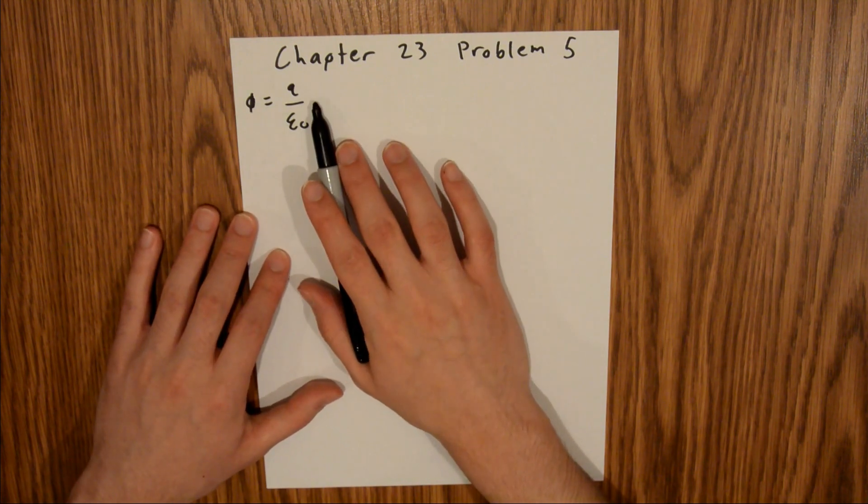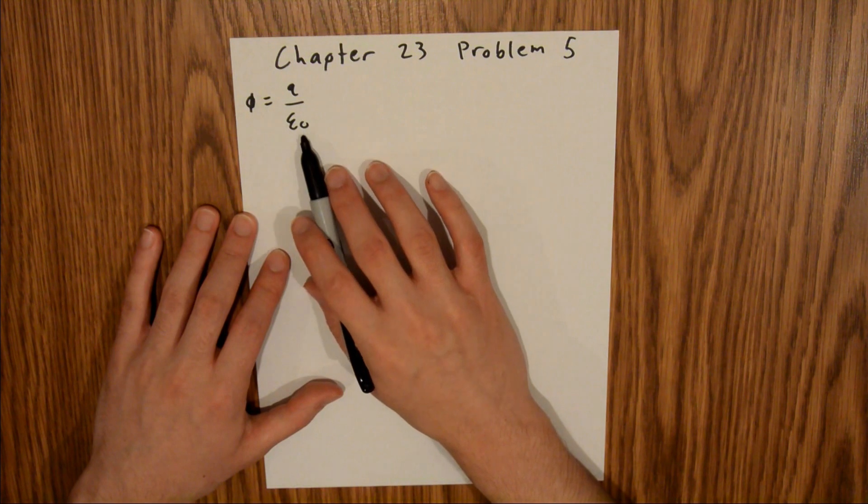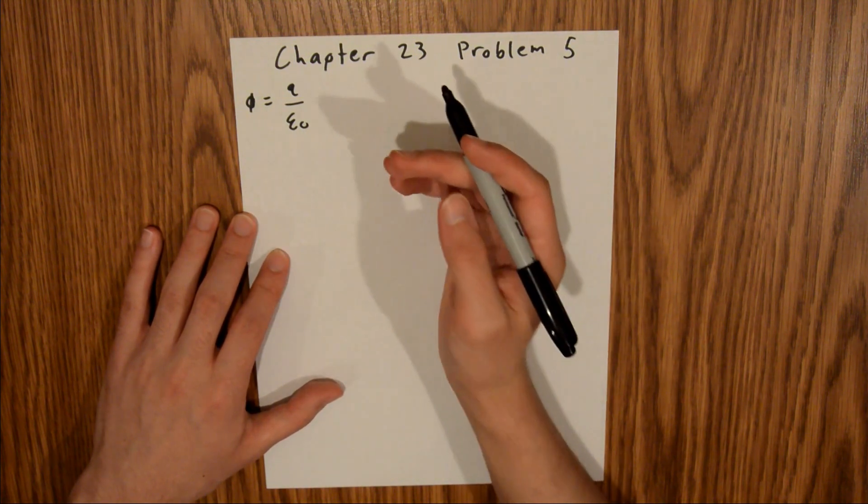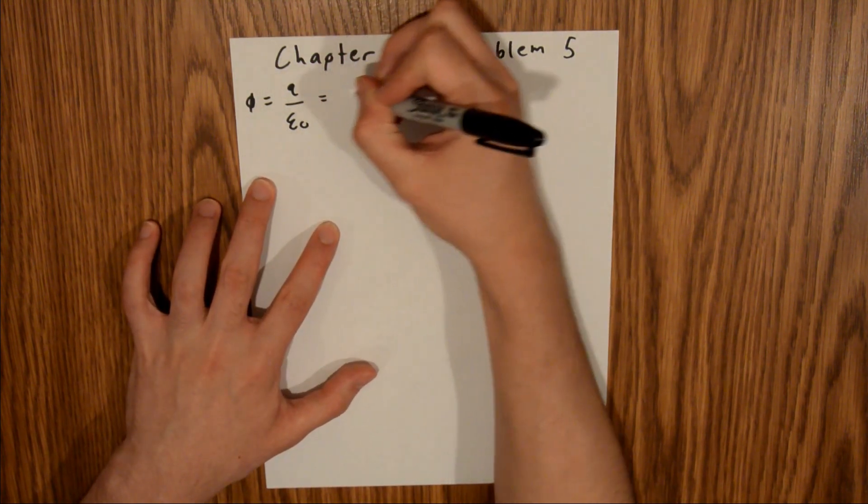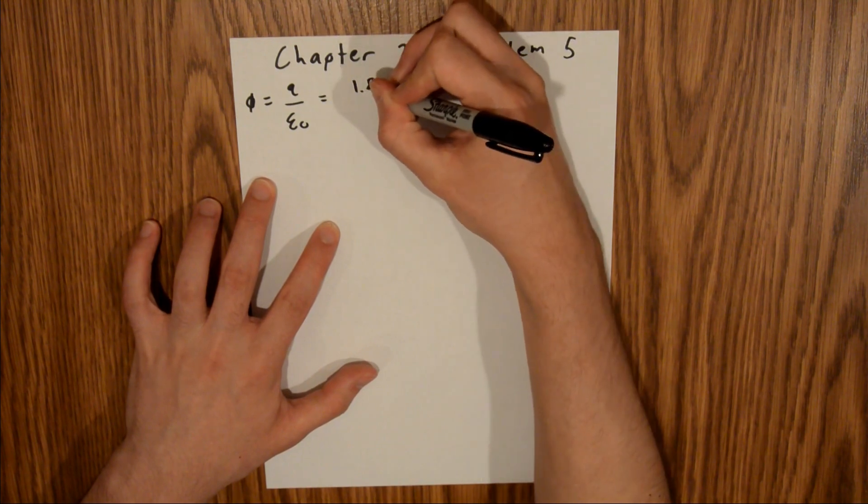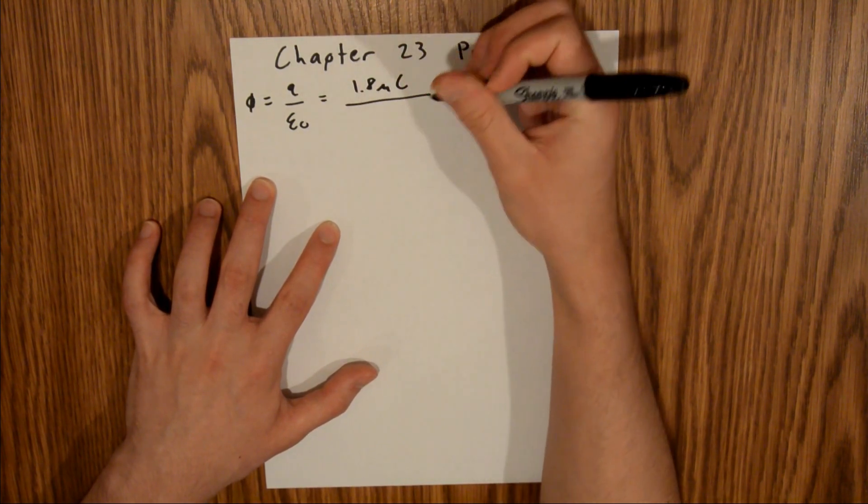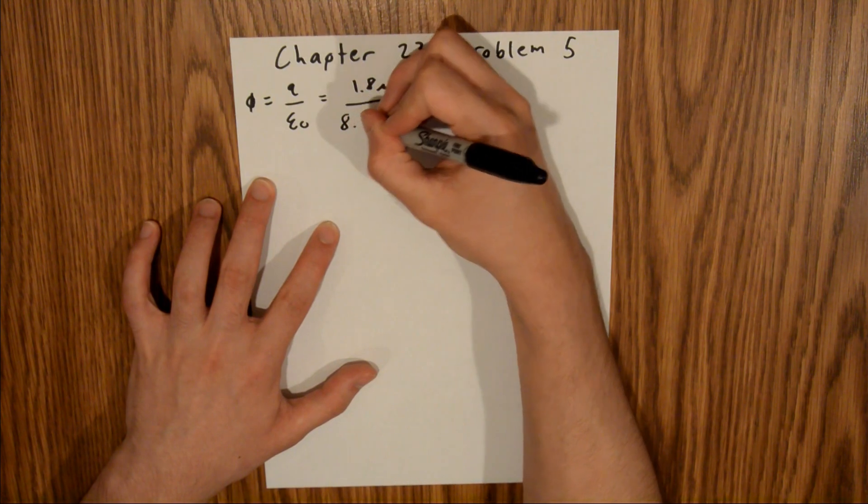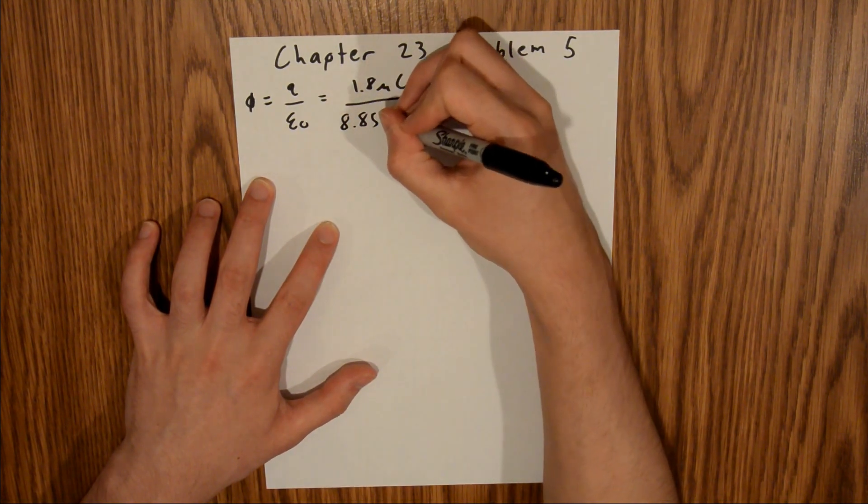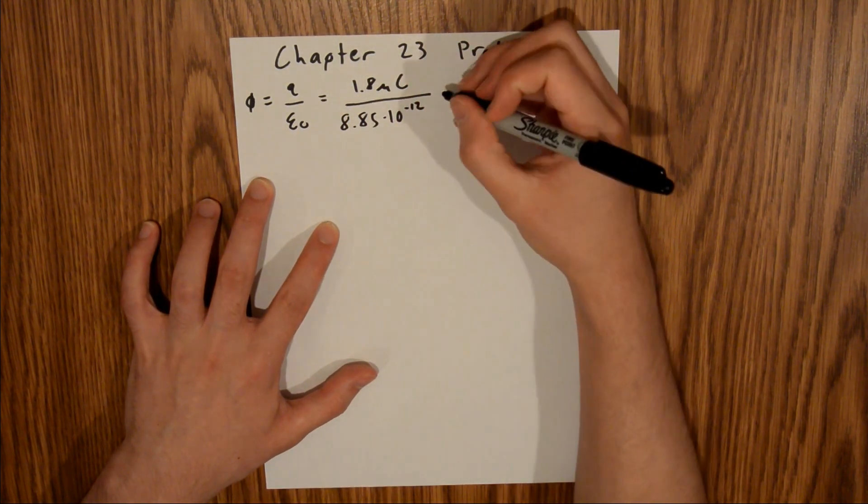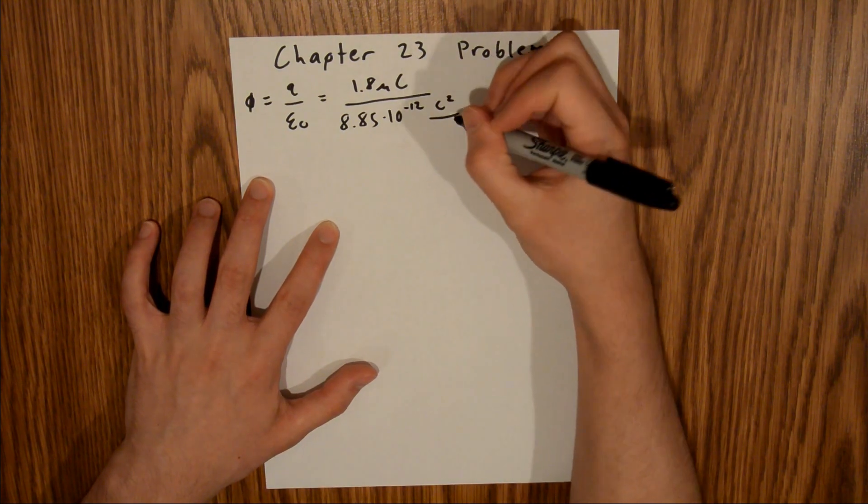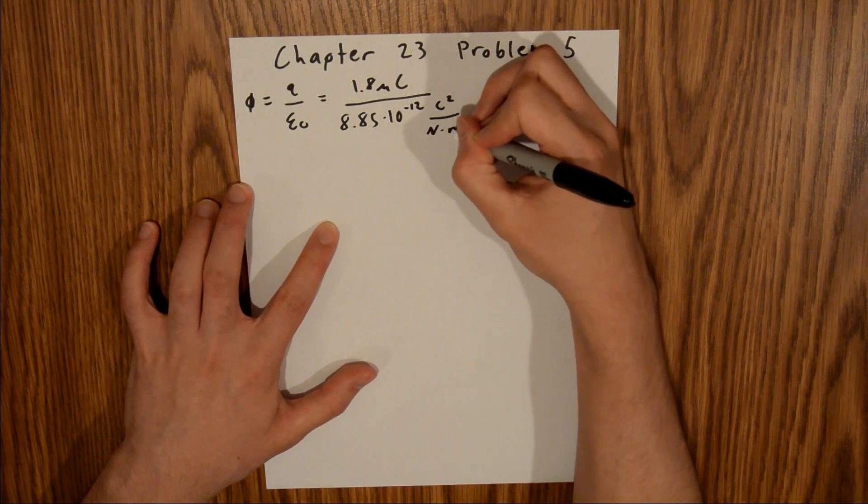We are given the charge in the problem, and this is a universal constant, so we can directly plug them in. This is equal to 1.8 microcoulombs divided by 8.85 times 10 to the negative 12th coulombs squared per newton times meter squared.